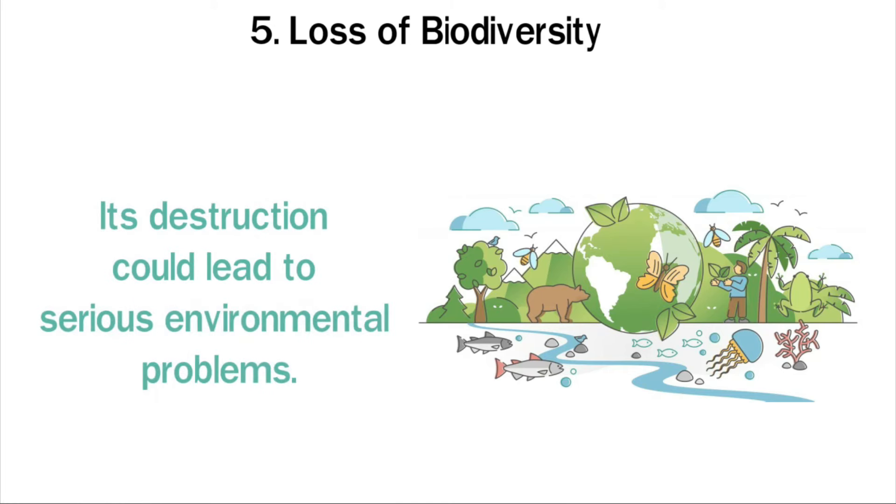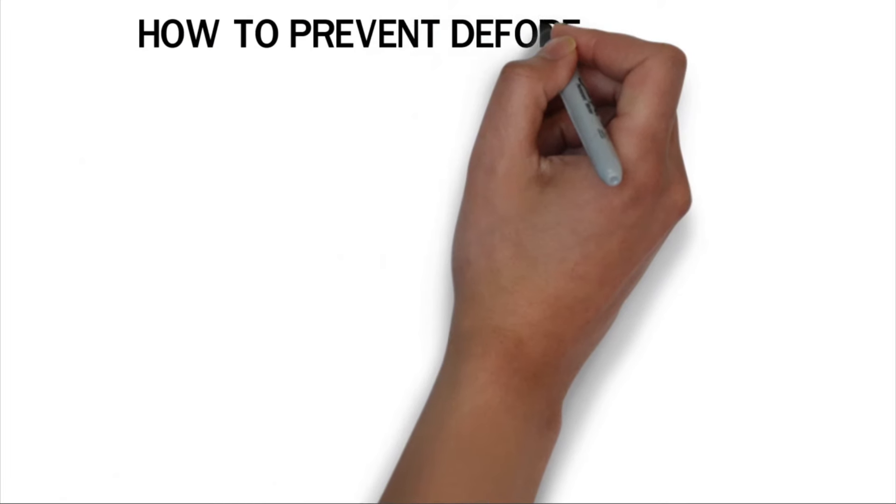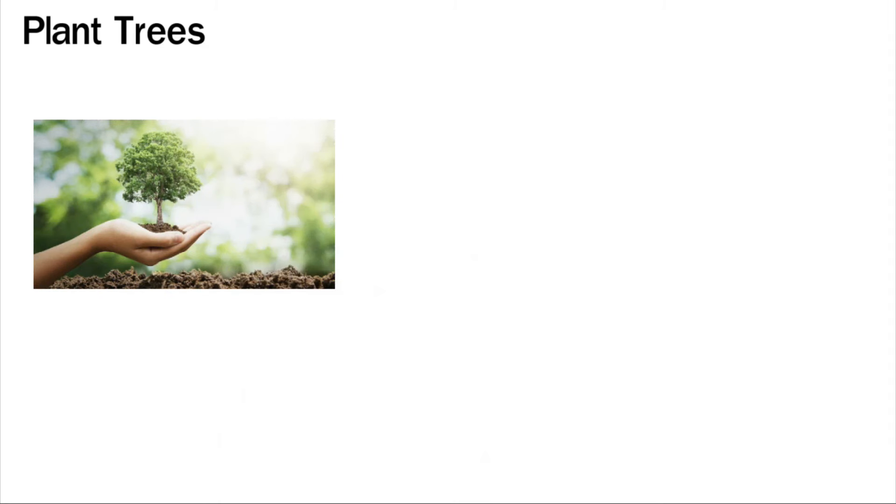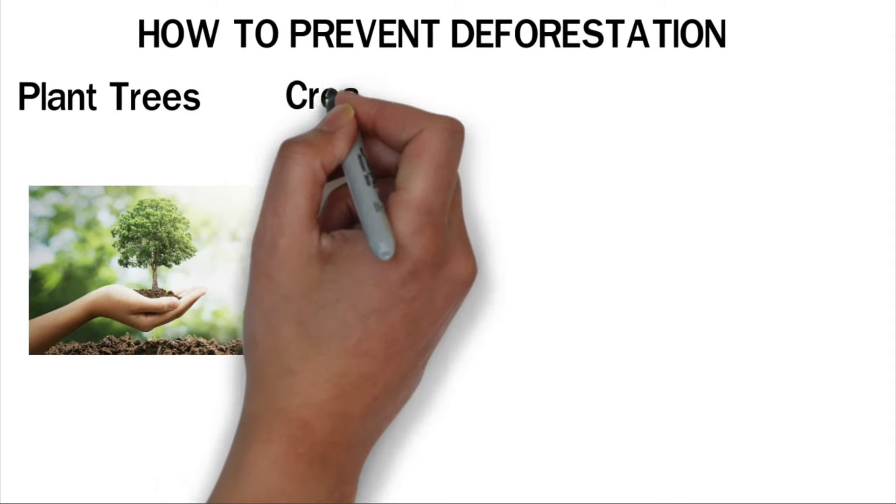How to prevent deforestation. There are different strategies that we can use to prevent deforestation. Plant trees: Trees are essential for the environment. By planting trees, we can avoid some of the problems listed above. Create awareness.